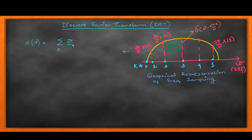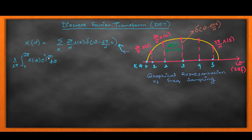Now I can write the formula for frequency sampling: (2π/N) × x(k) × δ(ω − 2πk/N). That equation came from the graphical representation. Now I'm going to do a common operation on both sides: integrate from 0 to 2π and multiply by e^(jωn) dω. The main reason for doing this is to simplify the right-hand side to get the Fourier transform formula.